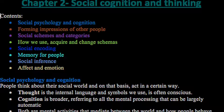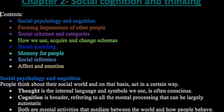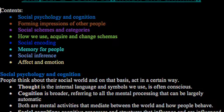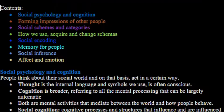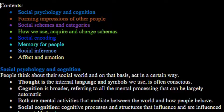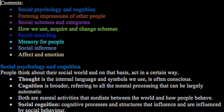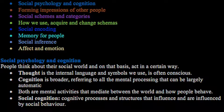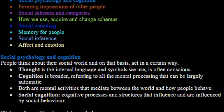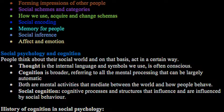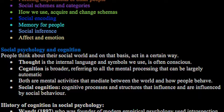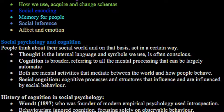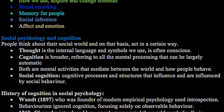To begin with, Social Psychology and Cognition. People think about their social world and on that basis they act in certain ways. Thought is the internal language and we use symbols — this is often a conscious process. Cognition is broader and refers to all mental processes that can be largely automatic. Both are mental activities that mediate between the world and how people behave. Social psychology concerns the cognitive processes and structures that influence and are influenced by social behaviour. There is a history of cognition in social psychology, which includes Wundt in 1897, who was the founder of modern empirical psychology and used introspection.